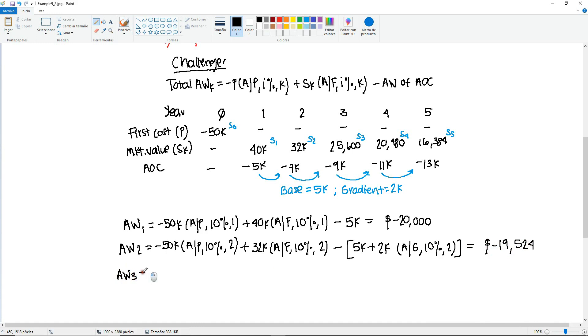And after solving this, you will get minus 19,524. Then we have annual worth of year three, same P, but now for three years, plus S3. So this is going to be plus 25,600, find A given F, 10% for three years. And you may recycle this inside the brackets, because now it's going to be 5,000, which is still the base, same base. The gradient doesn't change. There's only one thing that changes here, which is going to be the number of years. But the rest is the same. This will give us minus 19,245.